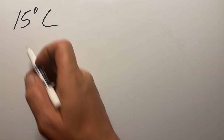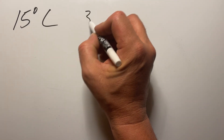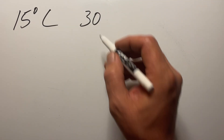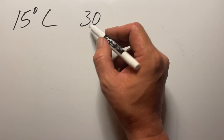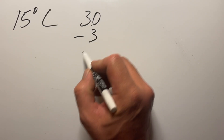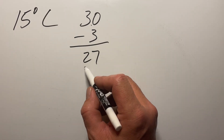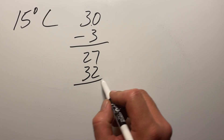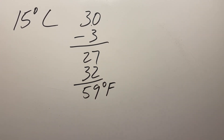The first number we're going to convert is 15 degrees Celsius. I'll show you the simple steps to do this in your head. First, take the 15 and double it to 30. Then move over one decimal place — that 30 becomes a 3. Subtract 3 from 30, which gives us 27. Then add 32, and that gets us 59 degrees Fahrenheit.